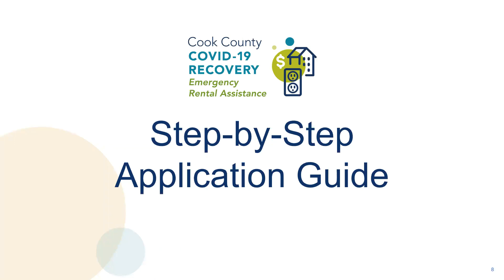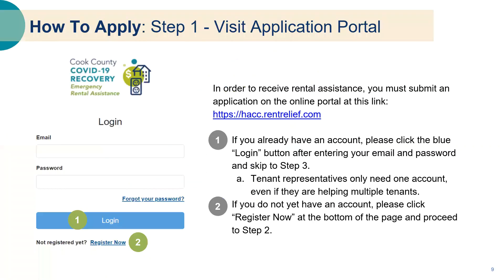We will now begin the step-by-step instructions to help guide you through the online application from start to finish. The first step is to create an account or login to the application portal at https://HACC.rentrelief.com. In order to receive rental and or utility assistance, you must submit an application on the online portal. For the purpose of this guide, we have broken the application down into 13 steps, with tasks for each step identified using green and gray numbers. If you would like to reference these slides, you can download a copy on the Cook County ERA website.